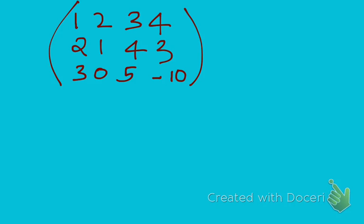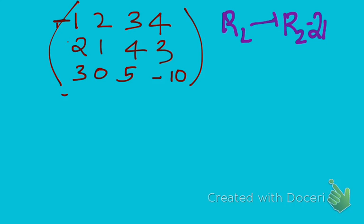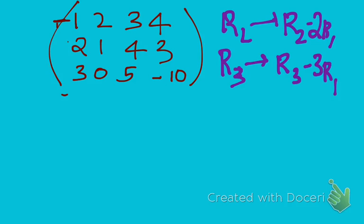To obtain the normal form, the first thing I'm going to do is make zeros in the first column. The first element of the first column is 1, the second element is 2, and the third element is 3. So I'll perform row operations: R2 is replaced with R2 minus 2R1, and R3 is replaced with R3 minus 3R1. Performing these two operations will make the first elements of rows 2 and 3 become 0.